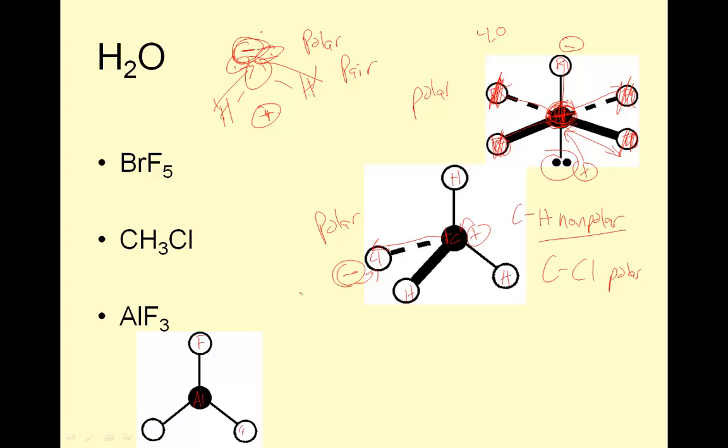AlF3, aluminum in the middle, F, F, F. Al to F is a polar bond, so I've got negative, negative, negative. You draw the arrow towards the negative end, put this positive sign towards the positive end. The negative end has the biggest electronegativity value, and the positive end has the smallest. Notice how these two would balance out to be right here. And this one would cancel with that one. So again, positive and negative are in the same place, so it's nonpolar.